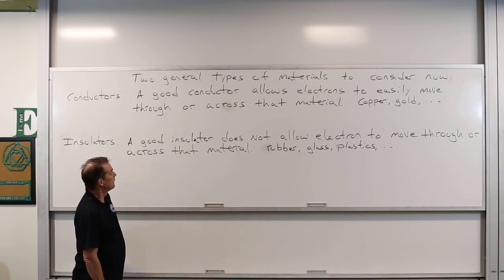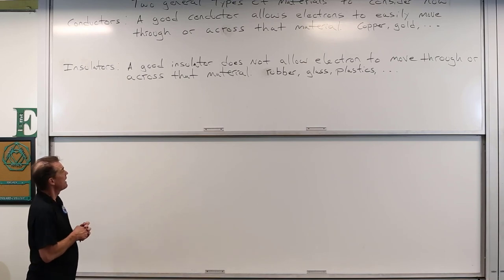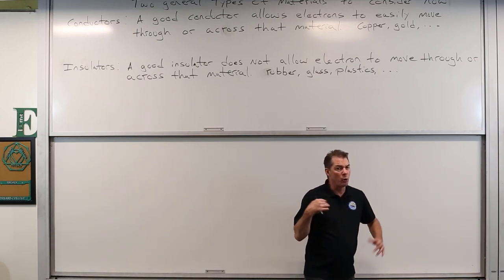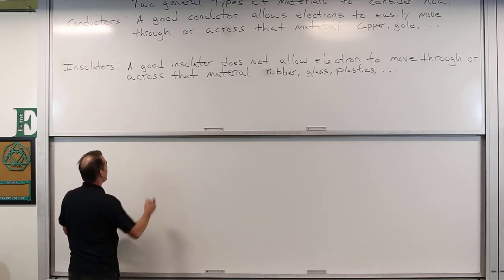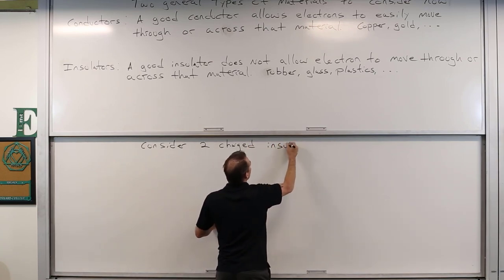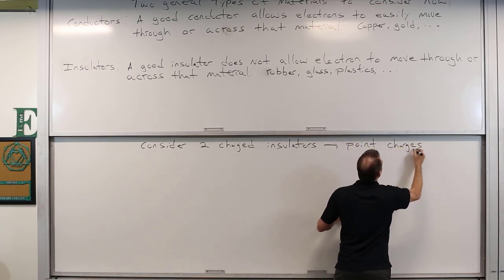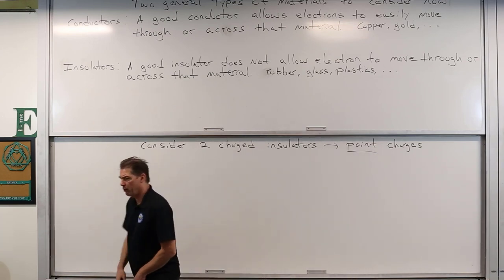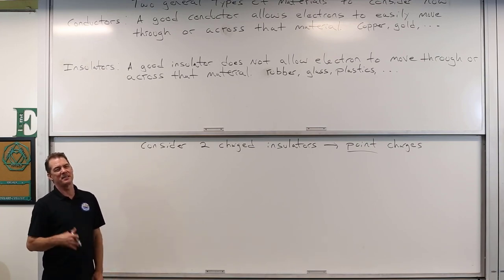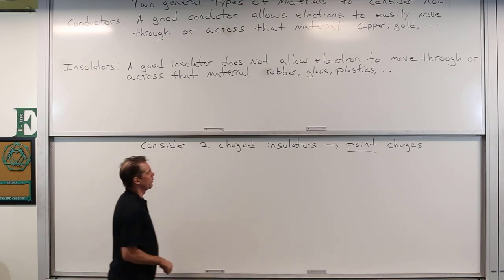So we'll look at both types of materials. What we want to consider now are two charged insulators — we're going to say point charges. By point charge, it's similar to what we use with point mass: some charge that doesn't really occupy space, or occupies a very small amount of space. A really small charged sphere would be a point charge.